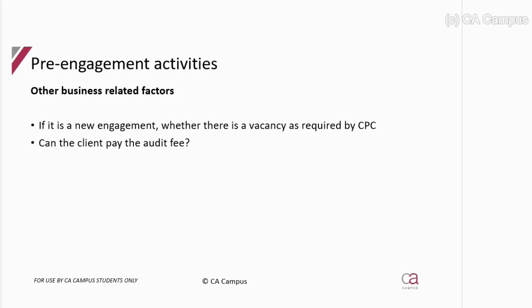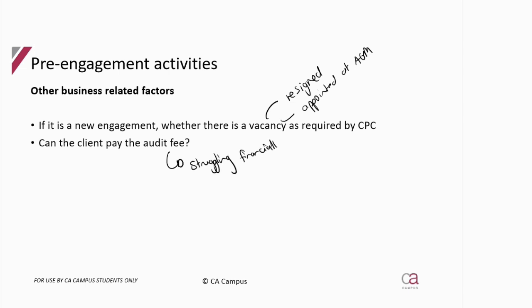For other business factors, you need to make sure there is a vacancy before accepting — you cannot audit when someone else is already doing the audit. You would find this out by seeing whether the previous auditor resigned or whether you were appointed at the AGM. You also need to consider whether the client can pay the fee, so look for any indicators that they are potentially struggling financially.